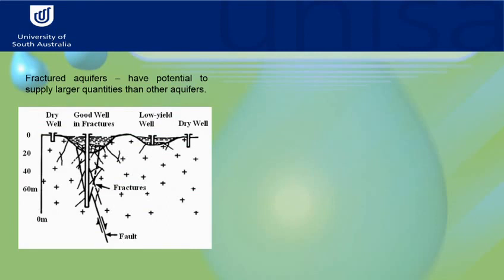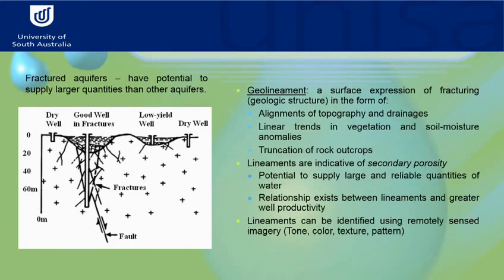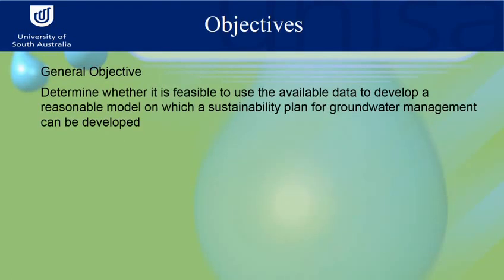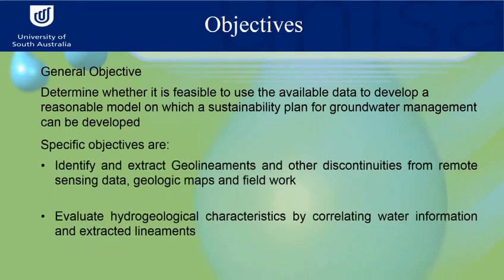Fractured aquifers are important for groundwater. As shown in the figure, there are two wells — a dry well and a good well — and the good well intersects with the fractured setting. A lineament is defined as any surface expression of a fractured geologic setting in the form of topography or drainage lines. The objective of this study is to use available data to study groundwater. Specifically, to identify and extract geo-lineaments and other discontinuities from remote sensing data, geologic maps, and field work, and finally to evaluate their hydrogeological characteristics.